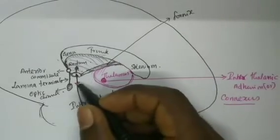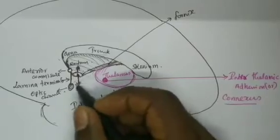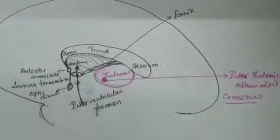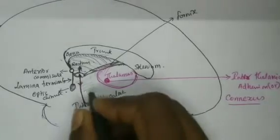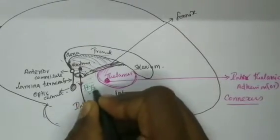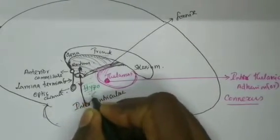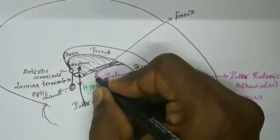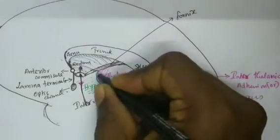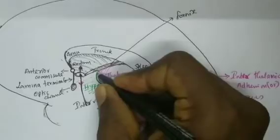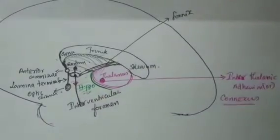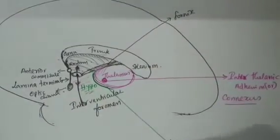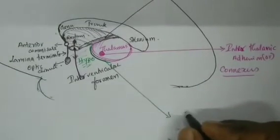In front of the thalamus we have this region called the hypothalamus. This hypothalamus is separated from the thalamus by means of a sulcus called the hypothalamic sulcus.